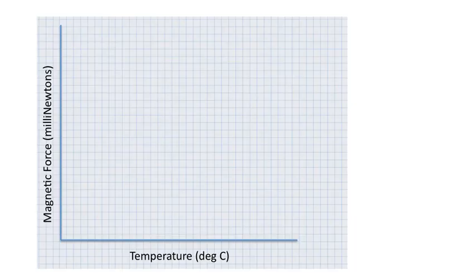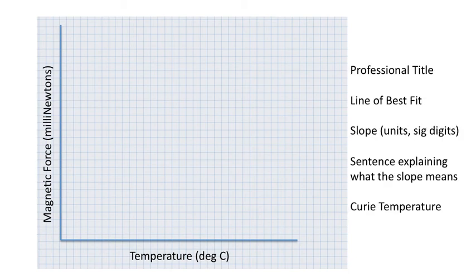Clearly, there's a trend going on. And so, today, I'd like you to make a graph of magnetic force and temperature. Temperature is on the x-axis because that was the variable we were in control of. And magnetic force is what we were measuring. My expectations today, I want a professional title. Please just don't write y versus x. I want a line of best fit. I want the slope. I want a sentence explaining what the slope means. And finally, I want the Curie temperature.